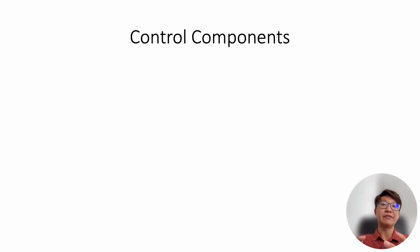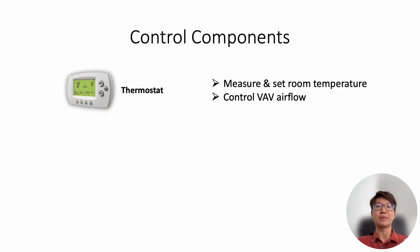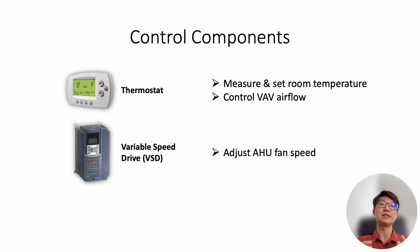So in order for VAV box to know how much airflow it wants to allow it to pass through, we need some control components. So the first control component is the thermostat. Thermostat is located inside a room. Then it is used to measure the current room temperature. And also it is used to set the room temperature. You can actually set how much temperature you want to maintain inside a room. So when the temperature deviated from there, then the thermostat will send a signal to the VAV to ask the VAV to either increase the airflow or reduce the airflow.